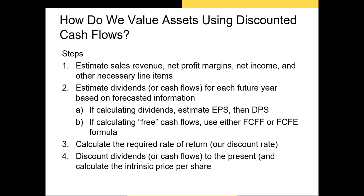We have four steps in the discounted cash flows procedure. First we need to estimate the line items necessary to calculate cash flows. Then we need to estimate our cash flows or dividends if you prefer. We'll primarily focus on free cash flows in our real world examples. There are two types of cash flows: free cash flows to the firm and free cash flows to equity, known as FCFF and FCFE respectively. The FCFF are generated by the firm while free cash flows to equity represent the cash flows that only flow to the shareholders.